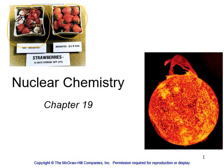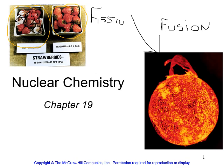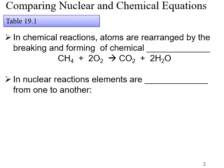By irradiating the sample of strawberries they'll last a lot longer — and the food itself does not become radioactive. We'll also look at fusion, which occurs in the Sun, and fission, which is where the radiation is produced that is used to irradiate the strawberries. Fission means to break into pieces; fusion means to come together.